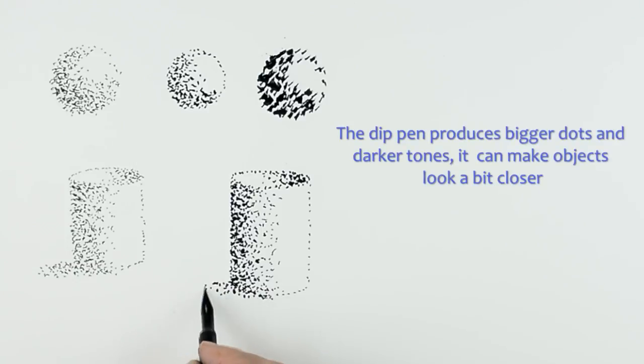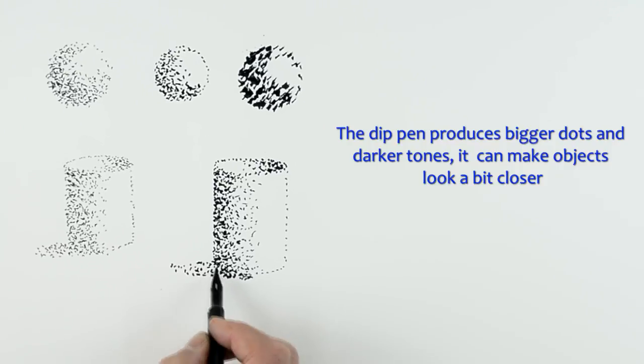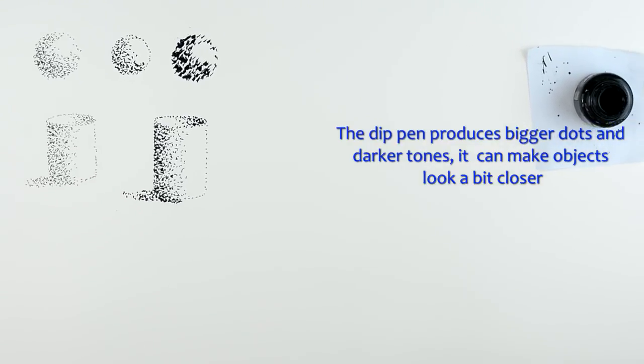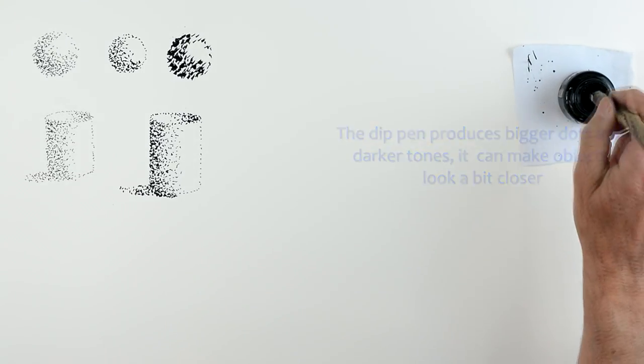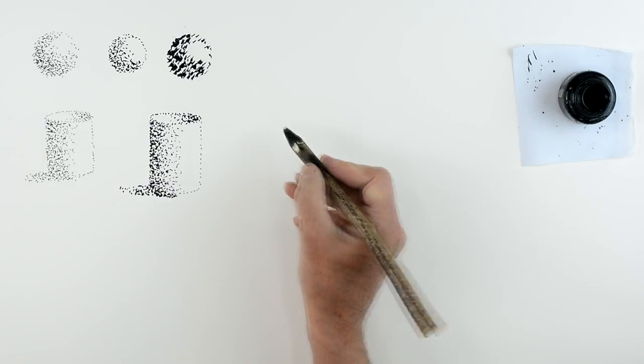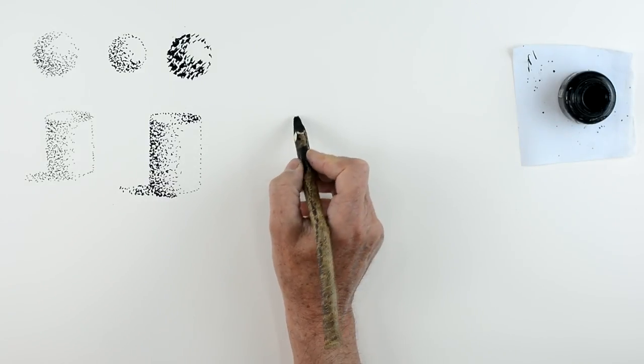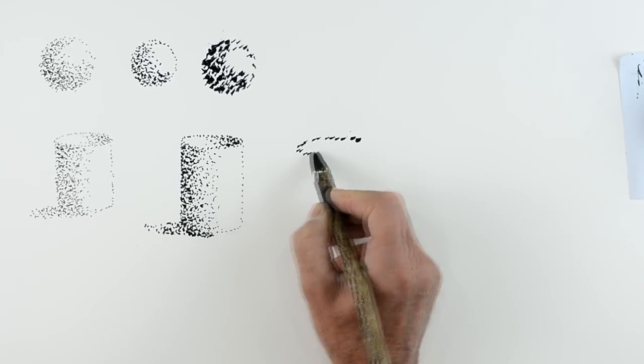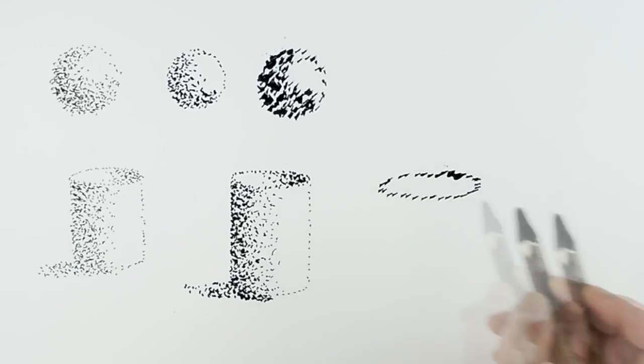Now, once we've done this one, we'll go on to make the object using the darker dip pen. You'll notice, have you noticed how one object looks as though it's closer to you than the other, simply because it's darker in tone.